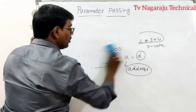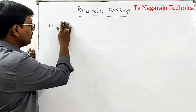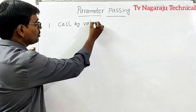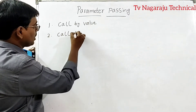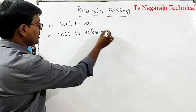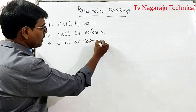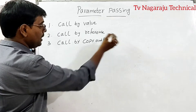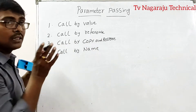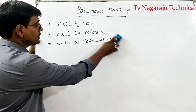We have different ways of passing the parameters. In this session, we will discuss the main four ways: first, call by value; second, call by reference; third, call by copy and restore; and fourth, call by name. We will discuss each one by one.